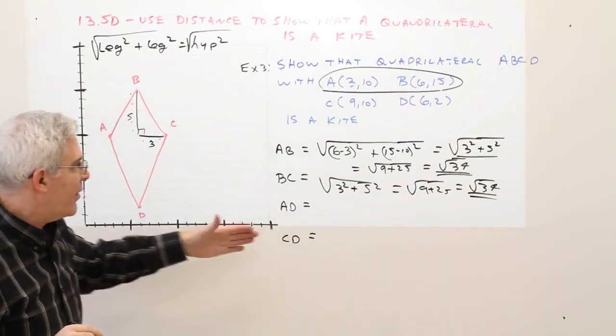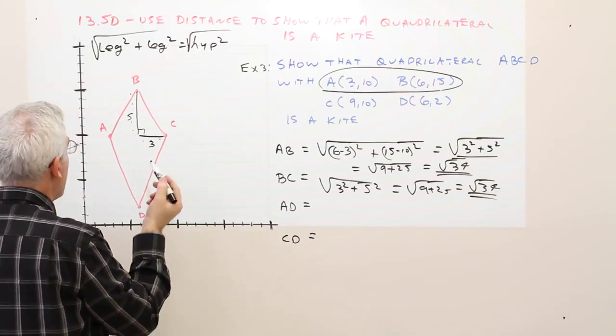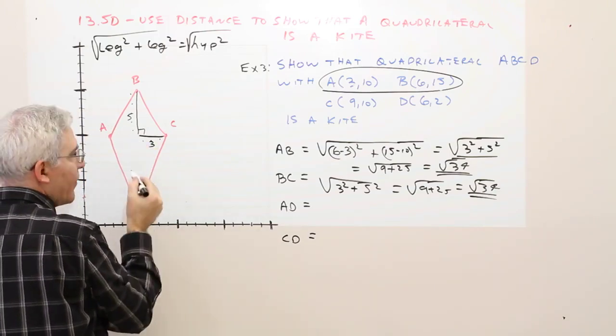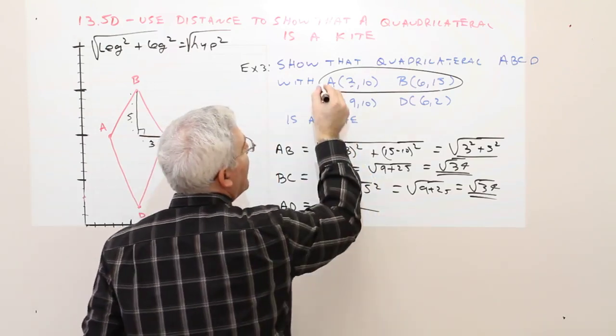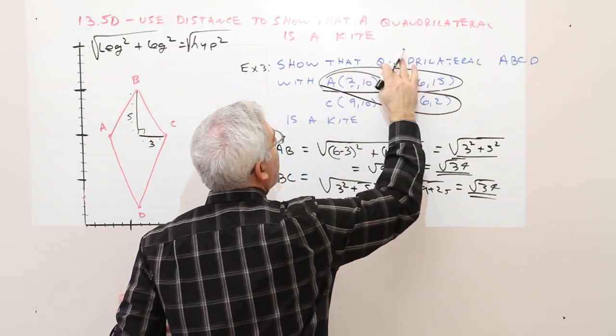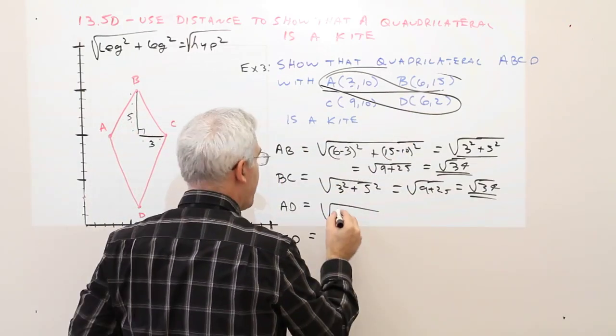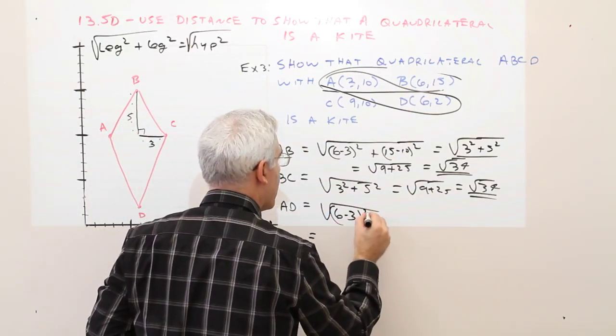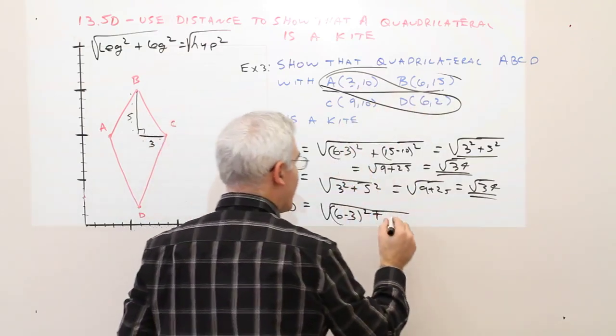Okay, so those are congruent. I just have to do it again with AD and CD. I'll just do the distance formula for AD. So for AD, I'm now using those two coordinates.